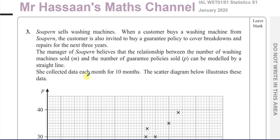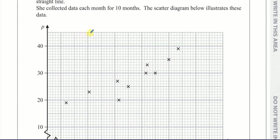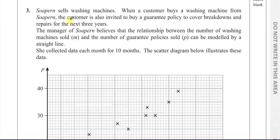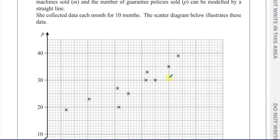They told us about a company called Sopern that sells washing machines. When a customer buys a washing machine from Sopern, the customer is also invited to buy a guarantee policy to cover breakdowns and repairs for the next three years. The manager of Sopern believes the relationship between the number of washing machines sold, M, and the number of guarantee policies sold, P, can be modelled by a straight line. She collected data each month for 10 months. So P is the policy and M is the number of machines — P against M.